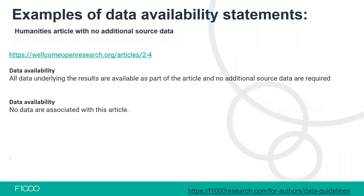For more simplified data availability statements: if data has been included in the article itself — for example in one or two tables — and no additional source data needs to be uploaded, the standard statement would be: 'All data underlying the results are available as part of the article and no additional source data are required.' This might also apply to a humanities study where you're discussing quotes from a text and all the information is actually included in your article itself.